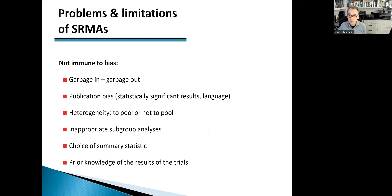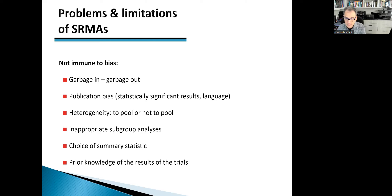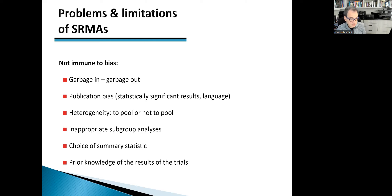There are a lot of problems that systematic reviews and meta-analyses can have. They're not a panacea and not immune to bias. There's a garbage-in, garbage-out situation: if all primary studies are terribly done, nothing can rescue the situation. There is also publication bias, heterogeneity, inappropriate subgroup analysis, choice of summary statistics — odds ratio, risk ratio, and so on — and the fact that we know the results of trials ahead of time, which makes it difficult to mask ourselves.